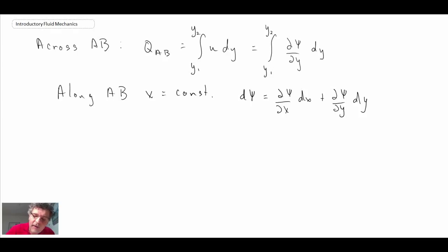If x is a constant, that means that term is not contributing anything. The other thing to notice is that this term here is actually the term that is in our integral up there, so we're going to make a substitution. What we then obtain is QAB. It's the total derivative of psi. When you integrate that, you get psi at 2 minus psi at 1. So the volumetric flow rate is just the difference between the two stream function values.